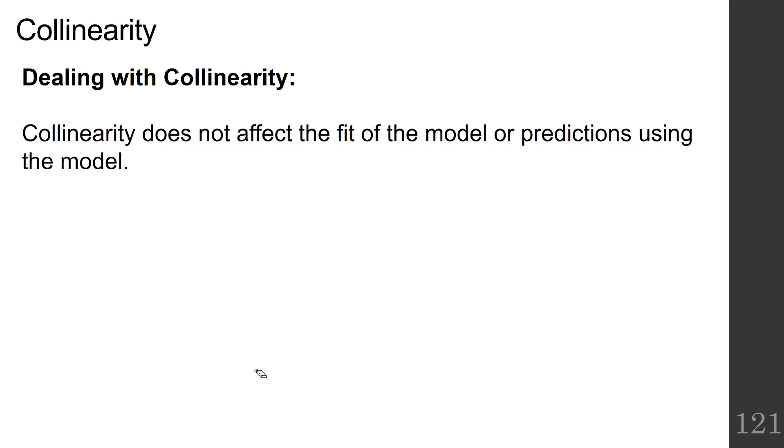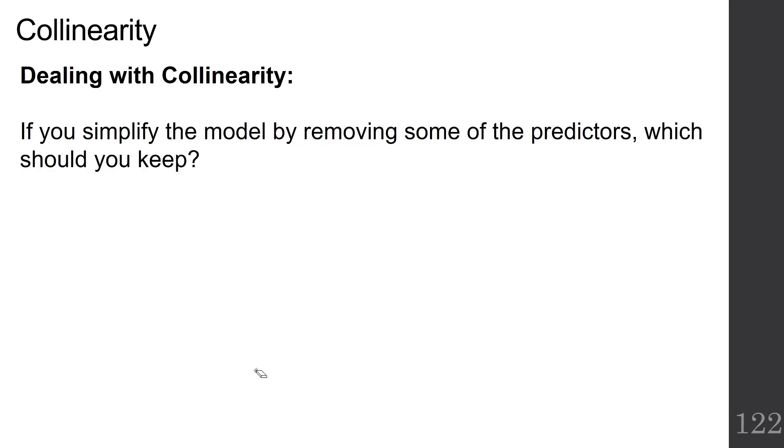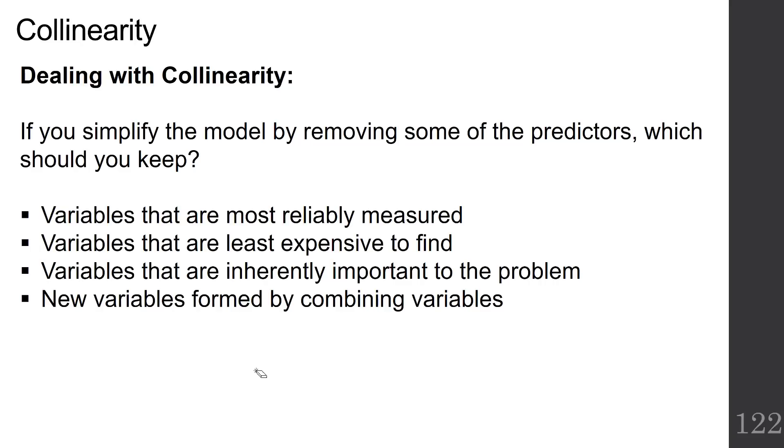What do you do in the presence of collinearity? Collinearity does not affect the fit of the model or predictions using the model, but it does make choosing the best set of predictors more difficult and can also mask or change the interpretation of the effect of a predictor on the response. It can change the sign. If you simplify the model by removing some of the predictors based on the VIF, which one should you keep? Keep the ones that are most reliably measured, keep the ones that are least expensive to find, keep the ones that are inherently important to the problem, or keep new variables formed by combining variables.